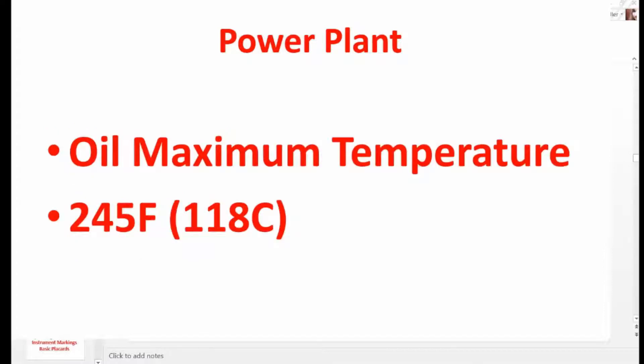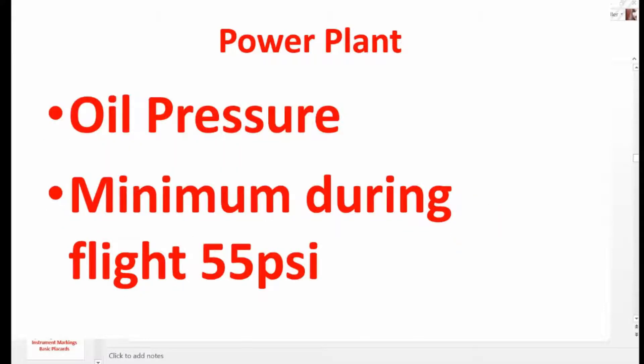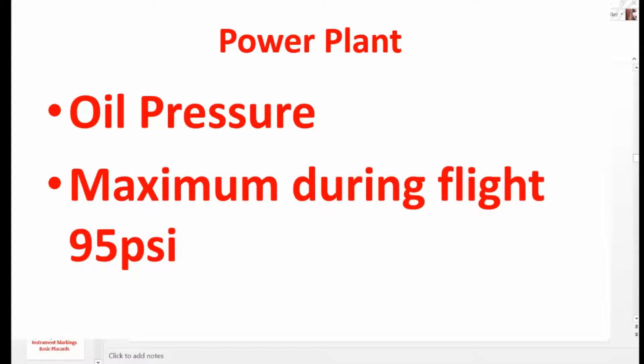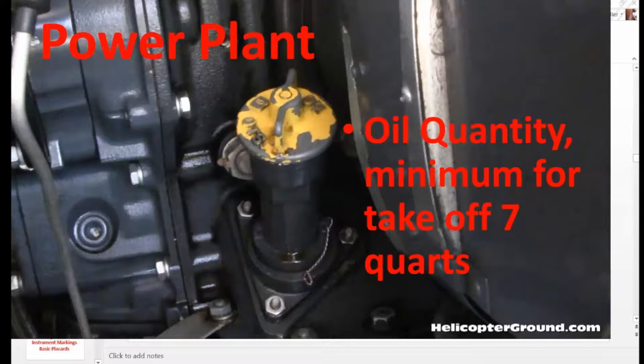Oil maximum temperature, 245 degrees Fahrenheit or 118 Celsius. Oil pressure minimum during idle, 25 PSI. Oil pressure minimum during flight, 55 PSI. Oil pressure maximum during flight, 95 PSI. Maximum oil pressure during startup and warm up, 115 PSI. Oil quantity minimum for takeoff, 7 quarts.